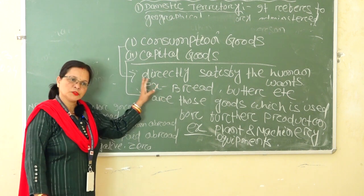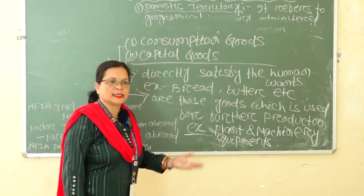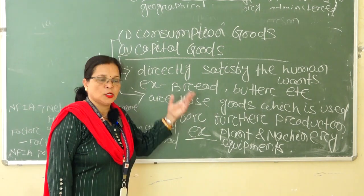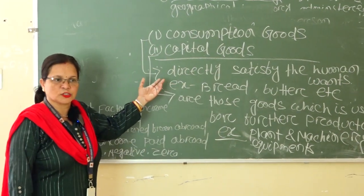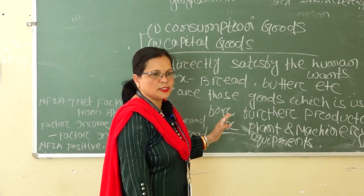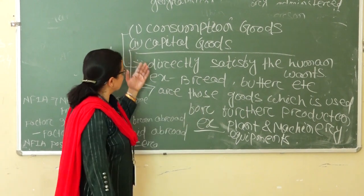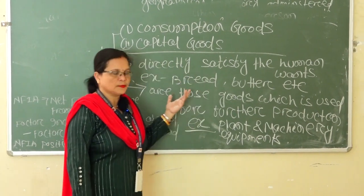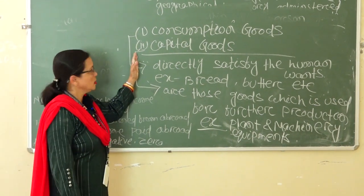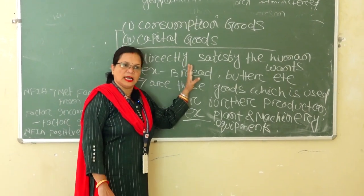So today we discussed macroeconomics and its concepts. The concepts of macroeconomics are: number one, domestic territory; number two, normal resident; number three, transfer income and factor income; number four, final goods and intermediate goods; and number five, consumption goods and capital goods. Thank you.